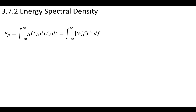Now that we've looked at the total amount of energy that a signal has — for an energy signal — we've already defined this total amount of energy by performing the integral from minus infinity to infinity. We've generalized it for a complex signal by multiplying the signal by its complex conjugate. We've also used Parseval's theorem to show that we can look at the total energy in the time domain or in the frequency domain.